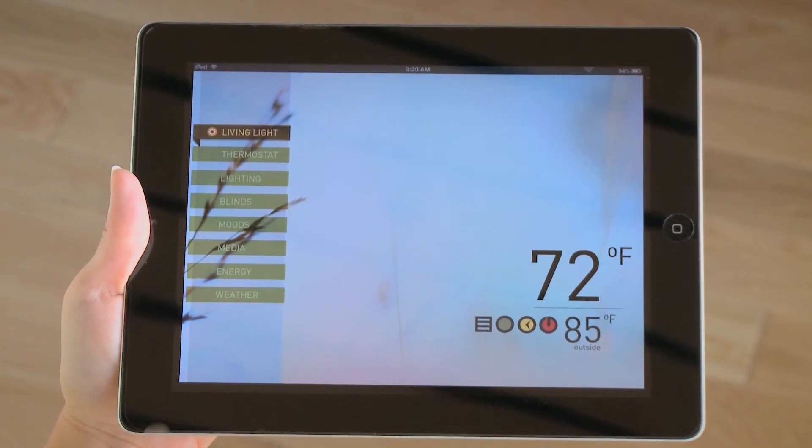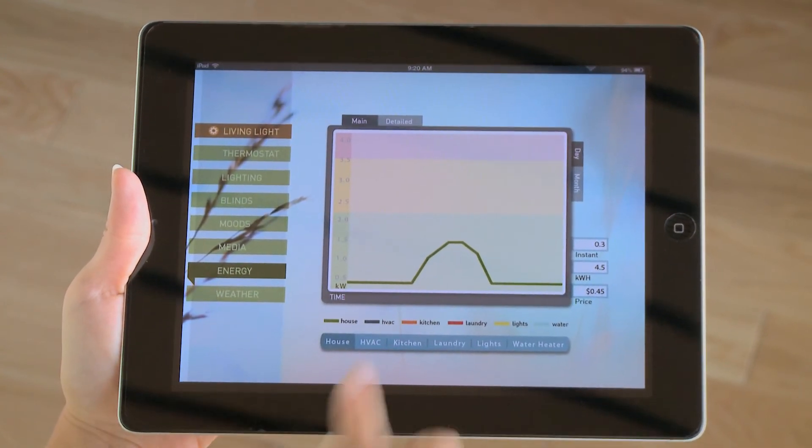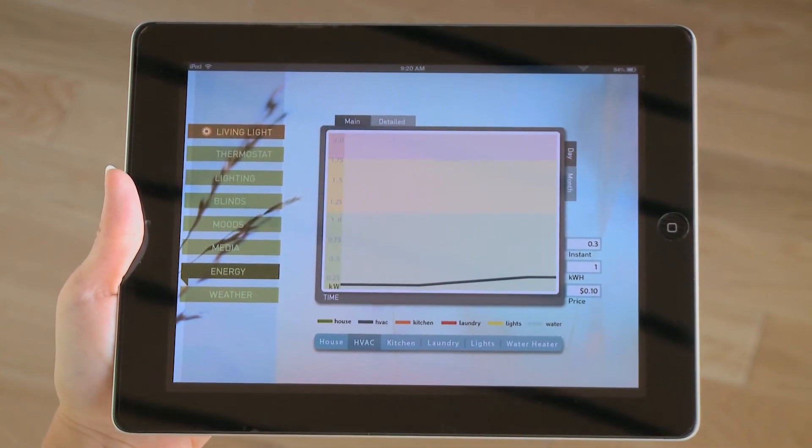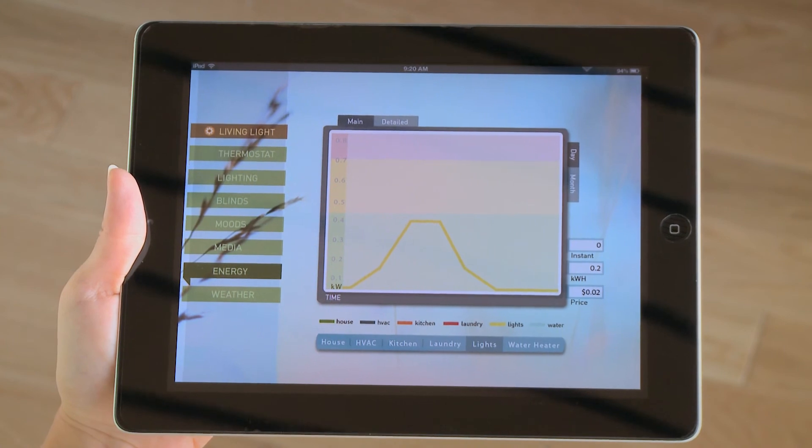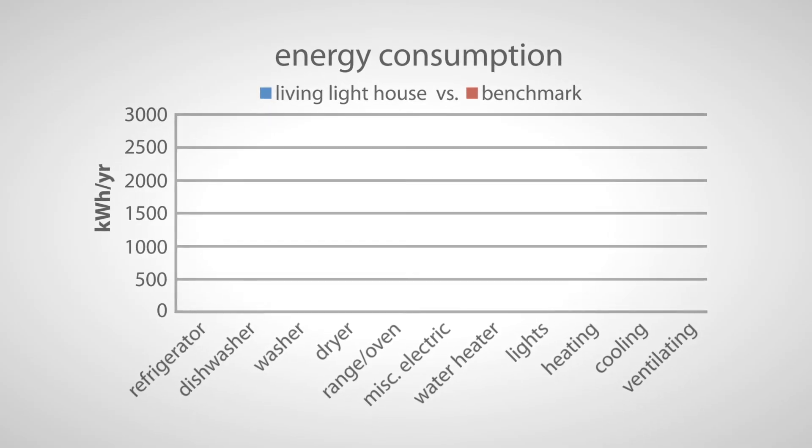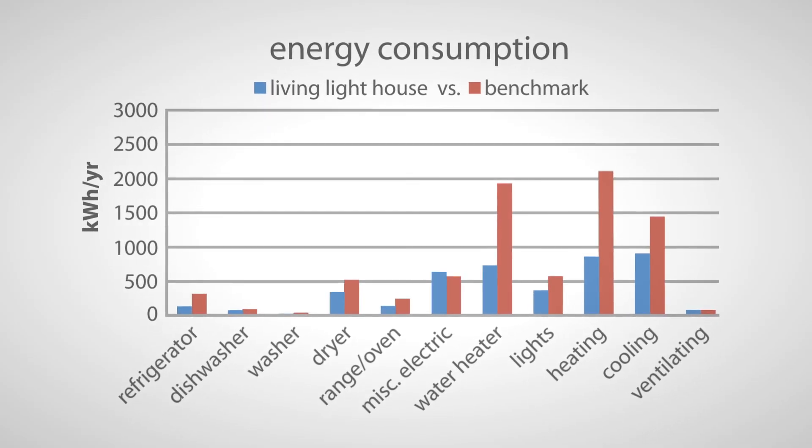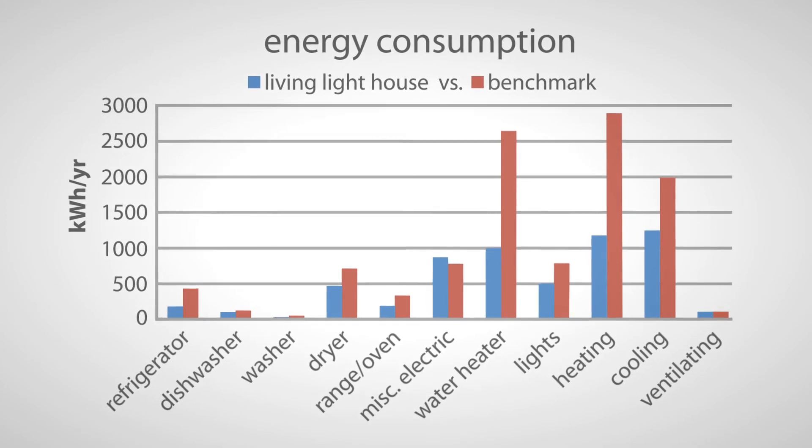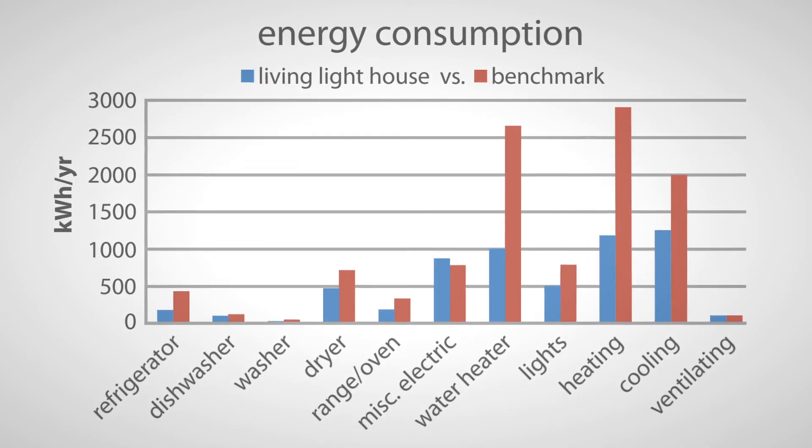To encourage energy-conscious decisions, the owners can monitor the use of every electric load through the iPad. The Energy Star appliances, lighting, and plug loads increase energy savings by approximately 6,800 kilowatt hours per year.